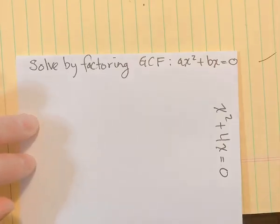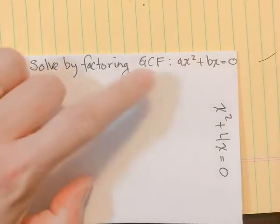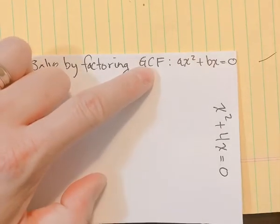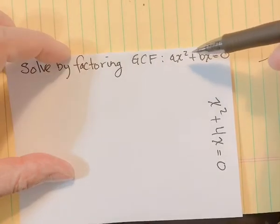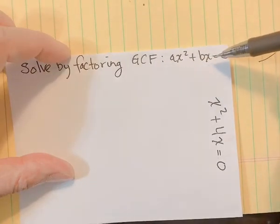Hello students, today I'd like to show you how to solve a quadratic equation by factoring GCF, which is greatest common factor, when your equation is in the form AX squared plus BX equals zero.